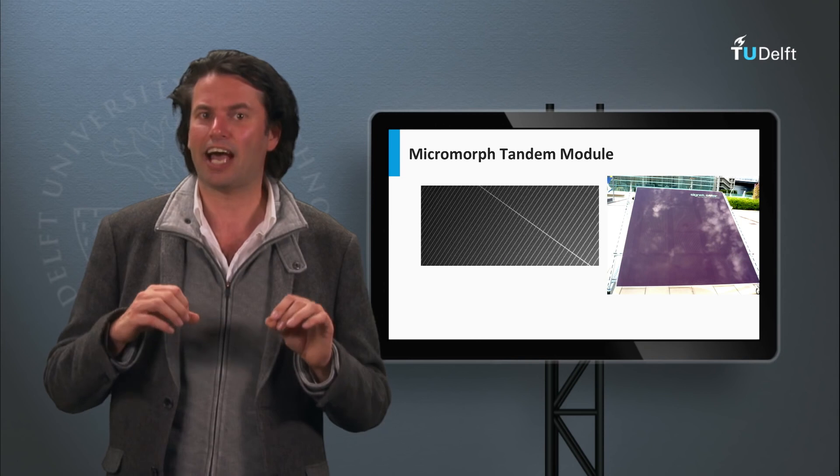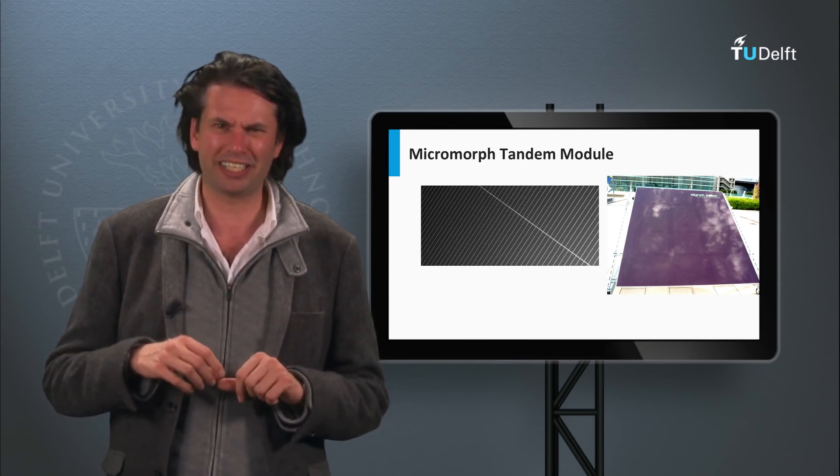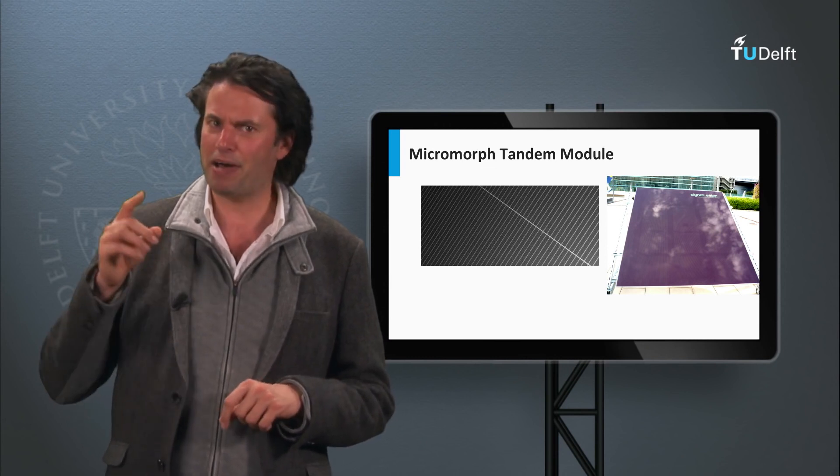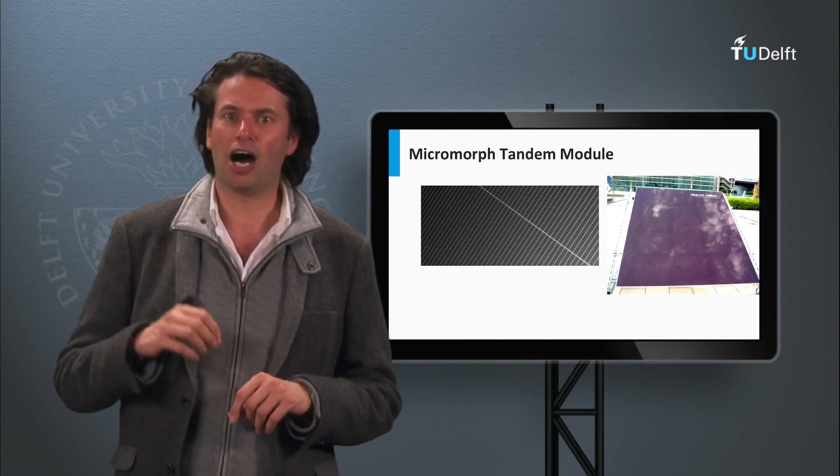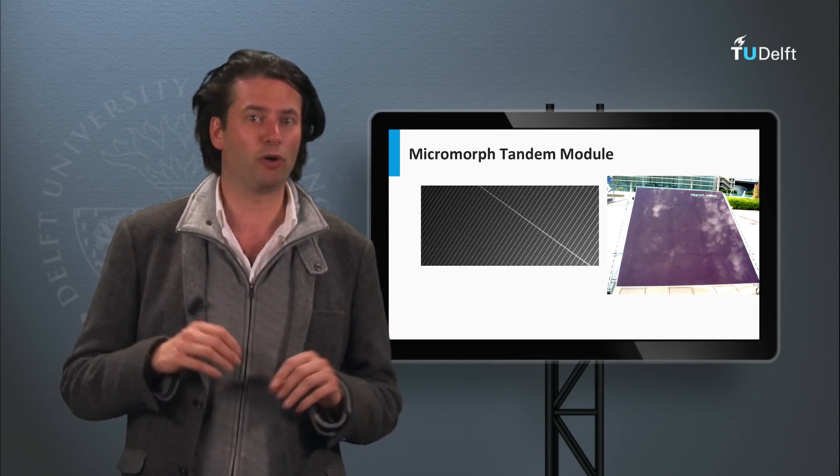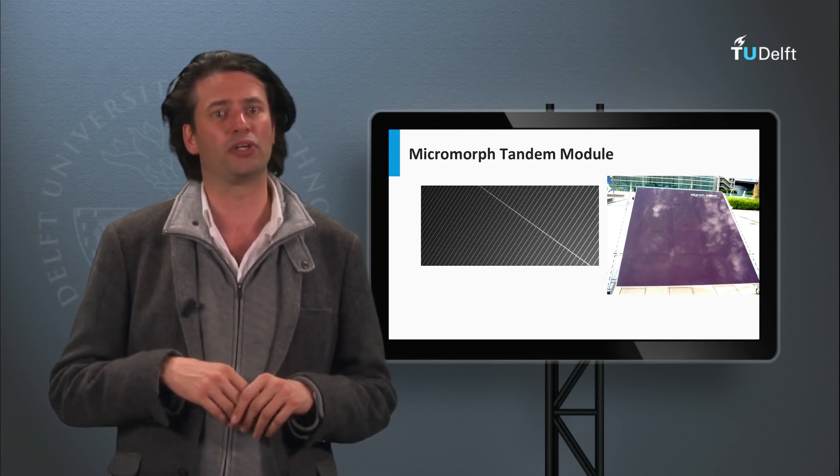Note that shading effects on this type of module is different from that of wafer-based crystalline silicon solar cells. The best module efficiencies are in the order of 11% as achieved by companies like Tokyo Electron, Panasonic, and Kaneka.